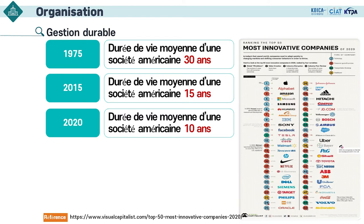Concernant la gestion durable, voyons la durée de vie des sociétés américaines les plus révolutionnaires. En 1975, la durée de vie moyenne d'une société américaine était de 30 ans. En 2015, la durée est réduite de moitié à 15 ans. En 2020, elle n'est plus que de 10 ans — elle ne cesse de diminuer.